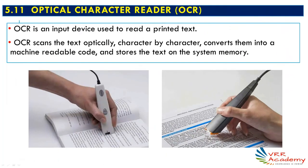The next input device is OCR — Optical Character Reader. It is used to read printed text. OCR scans text optically, character by character, converts it into machine-readable code, and stores the text in system memory. For example, you can take a hard copy printed on paper, use the OCR device to capture the text, and store it in the computer in digital (zeros and ones) format.